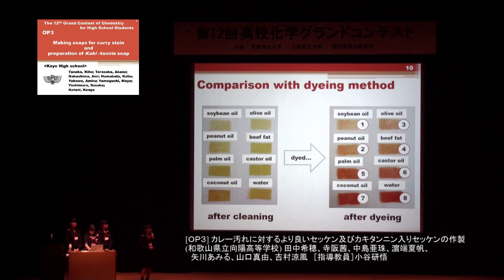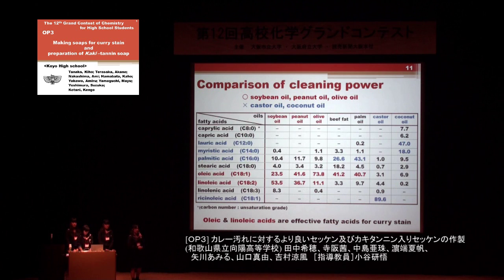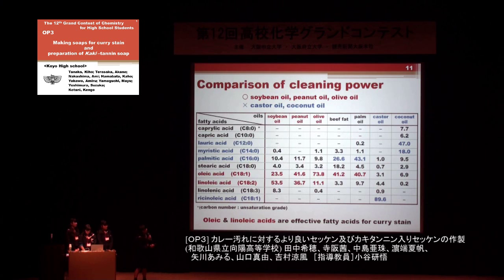This table shows the ratio of fatty acids in the natural oils. All of soybean, peanut, and olive oil contain oleic and linoleic acids in high ratio. On the other hand, the ratio of these acids in castor and coconut oil is very low. So, this table suggests oleic and linoleic acids are suitable for curry stain cleaning.